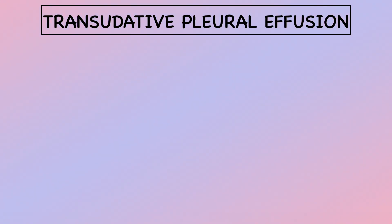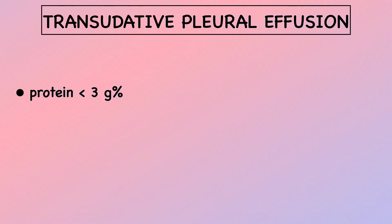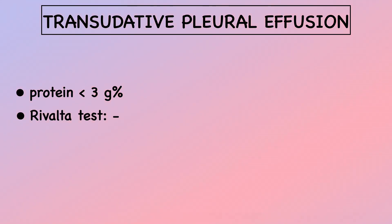Characteristics of transudative pleural effusion include low protein concentration less than 3 grams per cent, a negative Rivalta test, density less than 1.015, and low total cell counts.